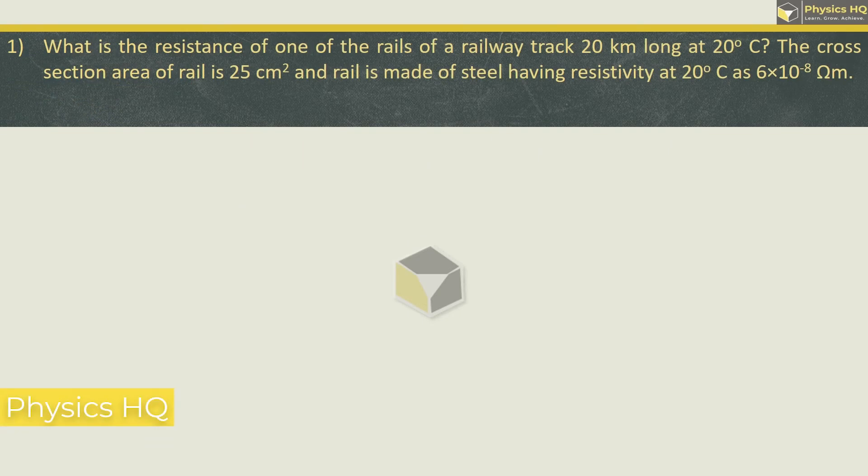What is the resistance of one of the rails of a railway track 20 km long at 20 degrees celsius? The cross section area of the rail is 25 cm squared and rail is made of steel having resistivity of 6 into 10 raise to minus 8 ohm meter.